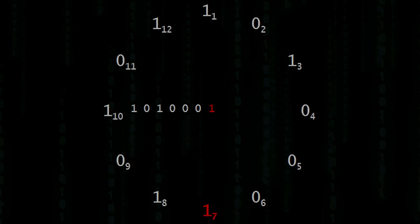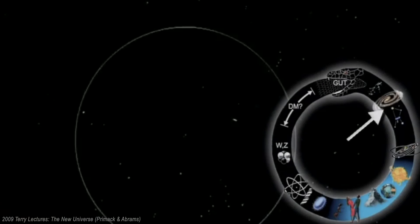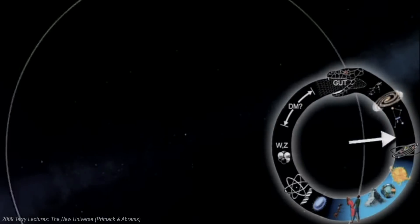I leave you with a quote from Thomas Pynchon. If patterns of ones and zeros were like patterns of human lives and deaths, if everything about an individual could be represented in a computer record by a long string of ones and zeros, then what kind of creature could be represented by a long string of lives and deaths?